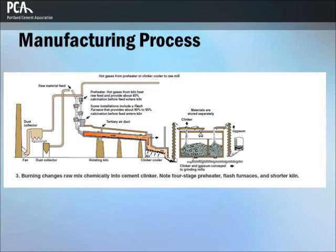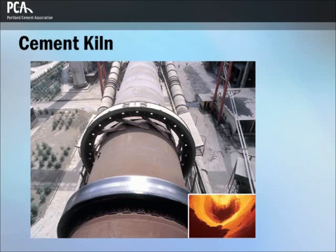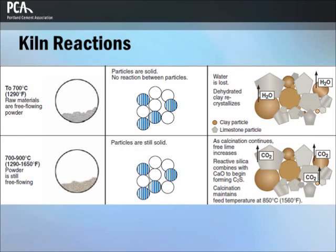In step 3, after blending, the ground raw materials are fed into the upper end of a kiln. Fuel is forced into the lower end of the kiln where it ignites and generates material temperatures of 1400 to 1550 degrees Celsius, or 2550 to 2800 degrees Fahrenheit. In the kiln, a number of chemical reactions occur, and burning changes the raw mix into clinker.